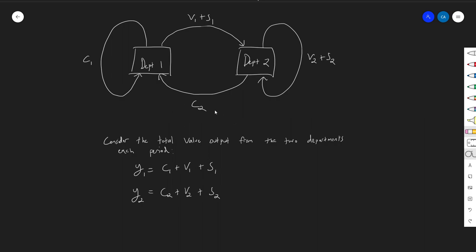In the case of simple reproduction, which we just looked at, they are not changing each period — they're just the same numbers each period. But now these things are going to be changing: people are going to be reinvesting and probably increasing. As they increase, that gives us a problem because we still want to break things down into the three kinds of C, V, and S parts.